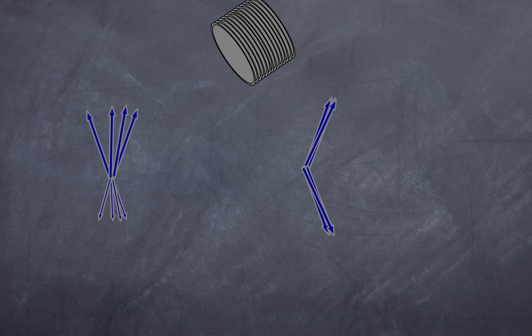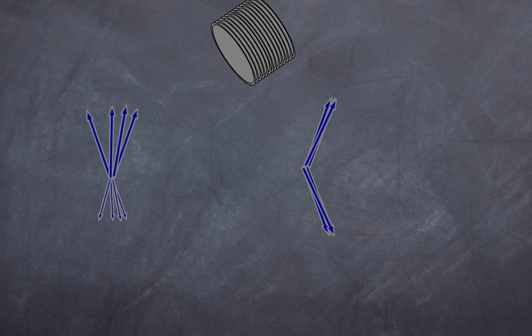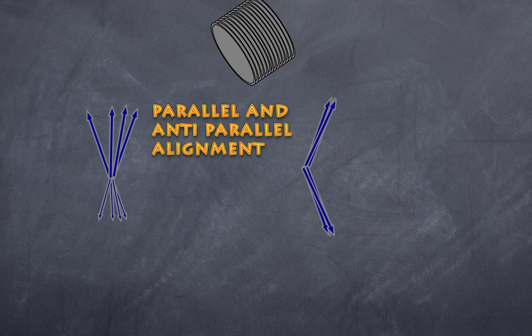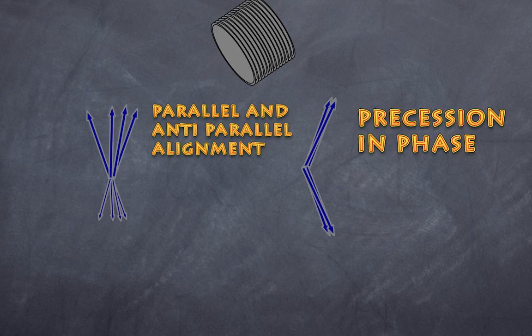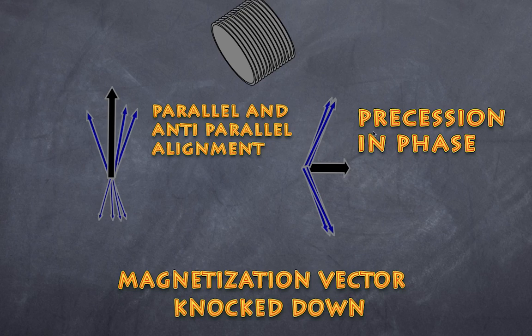Welcome to High School Physics Explained. Today I'm going to talk about relaxation. In my previous video I talked about resonance and two factors that lead to a higher energy state of hydrogen nuclei: spin flip, where you get more parallel alignment going to anti-parallel alignment, and second, the precessing hydrogen atoms going in phase. The net result is a net magnetization vector knocked from vertical to horizontal — that is resonance, going from a lower to a higher energy state.